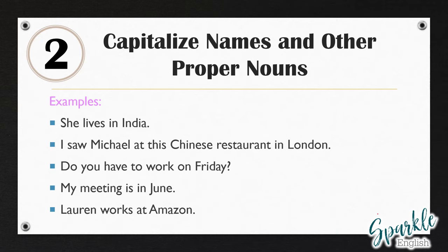Here are some more examples. 'She lives in India.' The 'she' is capitalized because it's the first word of the sentence, and 'India' is capitalized because it's the name of a country. 'I saw Michael at this Chinese restaurant in London.' 'Chinese' is a nationality, 'Michael' is a name, and 'I' is the first word of the sentence — which we always capitalize. 'Do you have to work on Friday?' 'My meeting is in June.' 'Lauren works at Amazon.' Amazon is the name of a company, so you capitalize it because it's a proper noun.